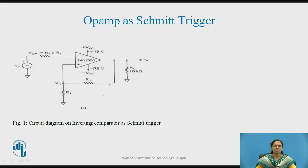The OPAMP is biased with the given specifications and resistor R2 is used as a feedback resistor. R1 and R2 form the voltage divider circuit, and the voltage across resistor R1 will be acting as the reference voltage for the comparator circuit — the inverting comparator circuit.